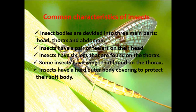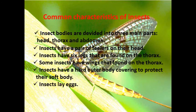Insects have a hard outer body covering to protect their soft body. So insects have a very hard body covering. Why? To protect their soft body — because their body is very soft, it needs to be covered with a very hard outer covering. And the last characteristic: insects lay eggs. All insects reproduce by laying eggs. Lay eggs means bertelur.